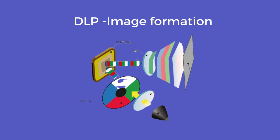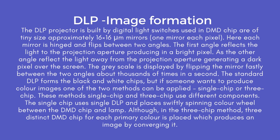DLP projector image formation: The DLP projector is built by digital light switches used in the DMD chip, which are of tiny size — approximately 16 by 16 micrometers mirrors, one mirror per pixel. Each mirror is hinged and flips between two angles. The first angle reflects the light to the projection aperture, producing a bright pixel. The other angle reflects the light away from the projection aperture, generating a dark pixel on the screen. The grayscale is displayed by flipping the mirror rapidly between the two angles, about thousands of times per second.